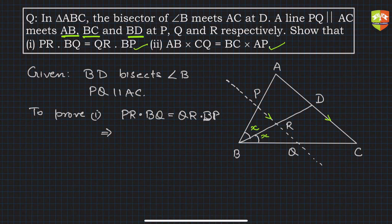PR/QR = BP/BQ, which follows directly from triangle BQP.